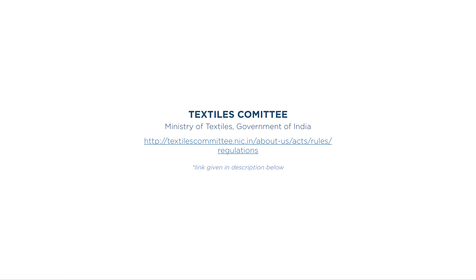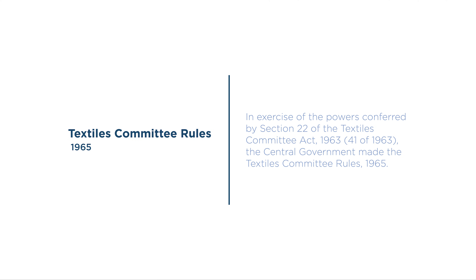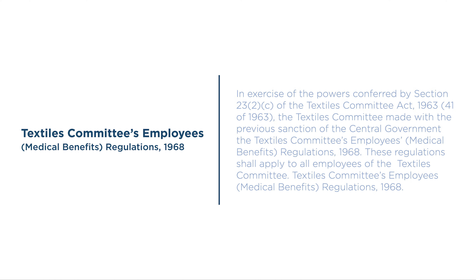Now we will go into the actual part of the syllabus — the acts, rules, and regulations laid out by the Ministry of Textiles, Government of India. A link is provided below for reference. The slides follow the Textile Committee Rules of 1965. Under Section 22 of the Act 1963, the central government has made rules for the textile industry, dealing with medical benefits for committee employees, as per powers conferred by Section 23(2) of the Act 1963.